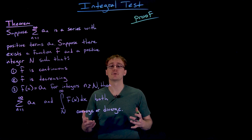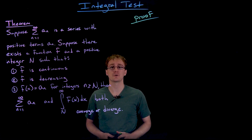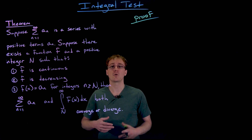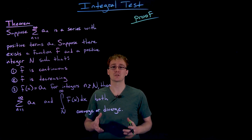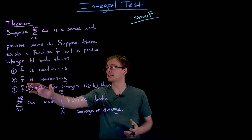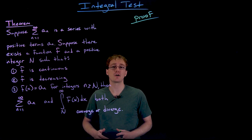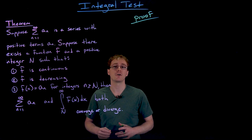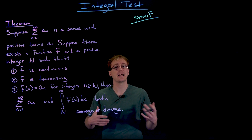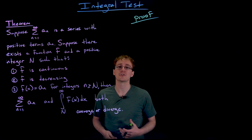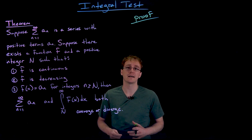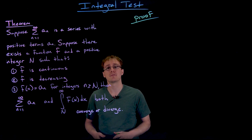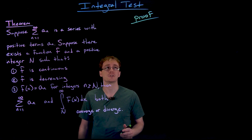Next we're going to prove the integral test using a geometric proof — drawing a picture. We'll show that the area underneath the curve of f very well approximates the sum of our series, so if that area is finite the sum will be finite, and if that area diverges the sum must also diverge.